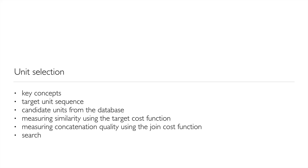We're going to look at a thing called the TargetCost function and the JoinCost function that capture these costs. We're not going to look in complete detail at the TargetCost function, because that will come a little bit later, but we'll finish off by seeing how a search is conducted efficiently to find the optimal unit sequence.